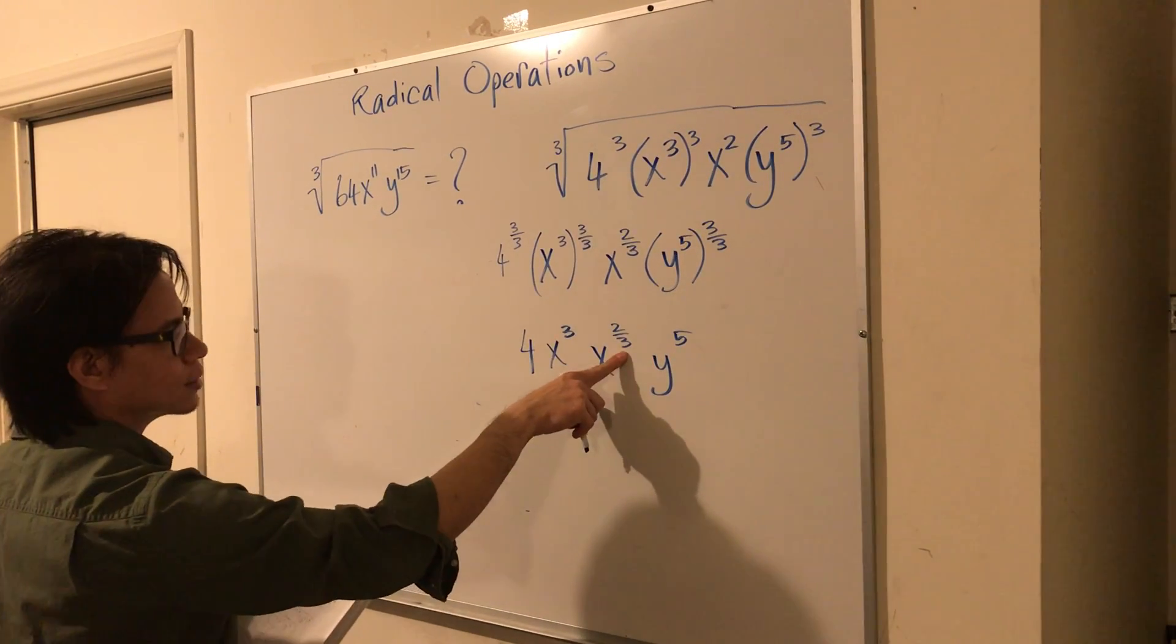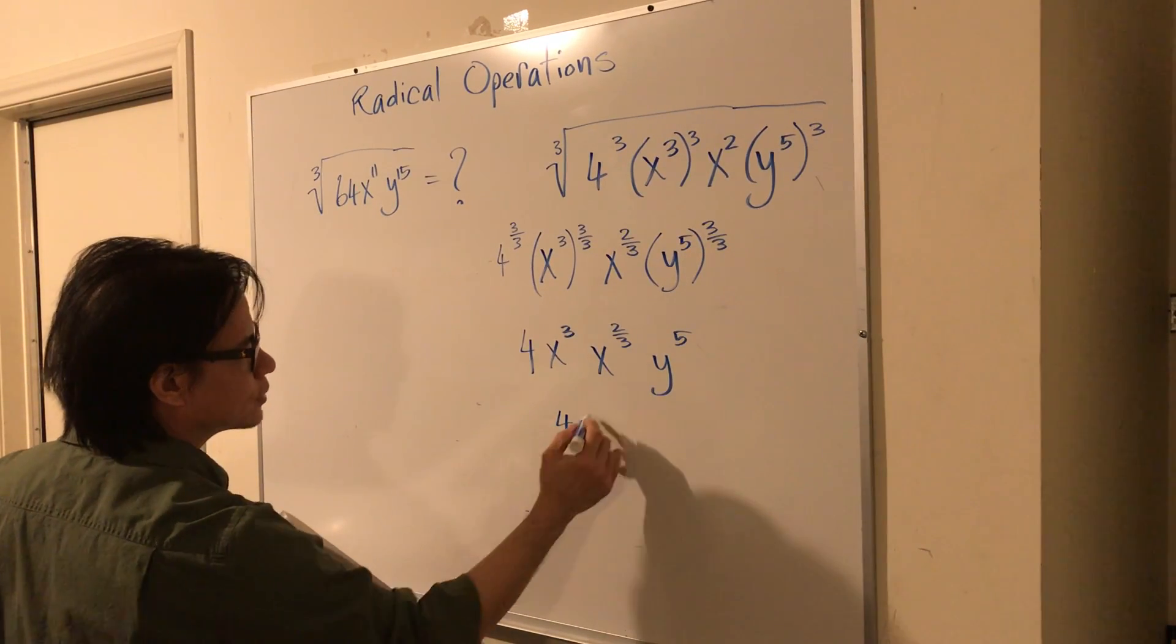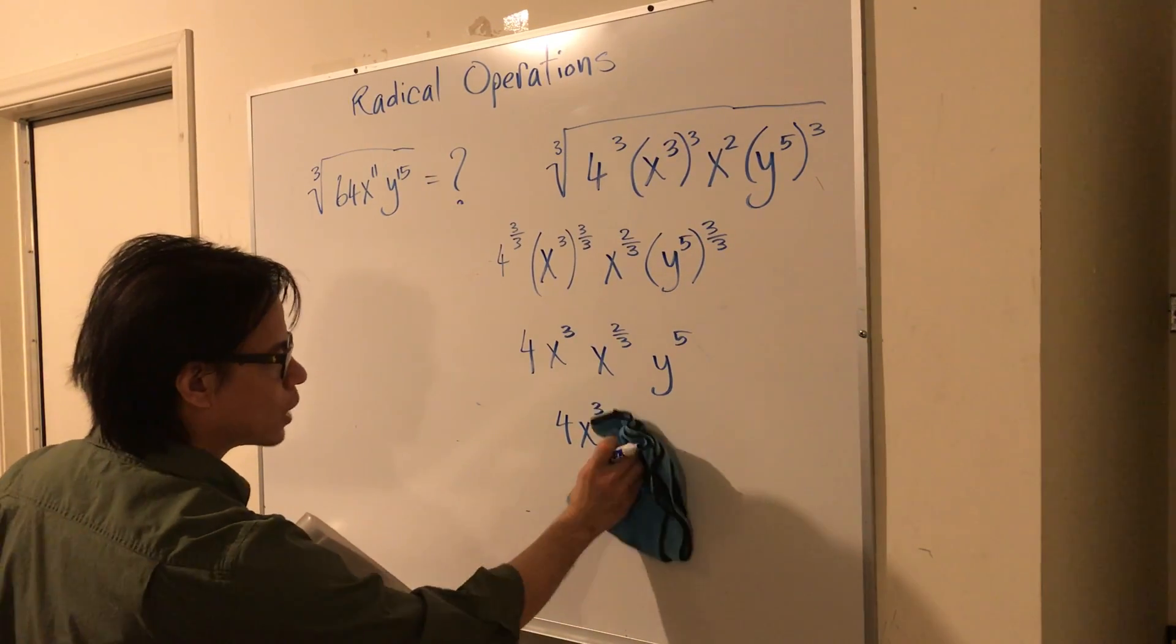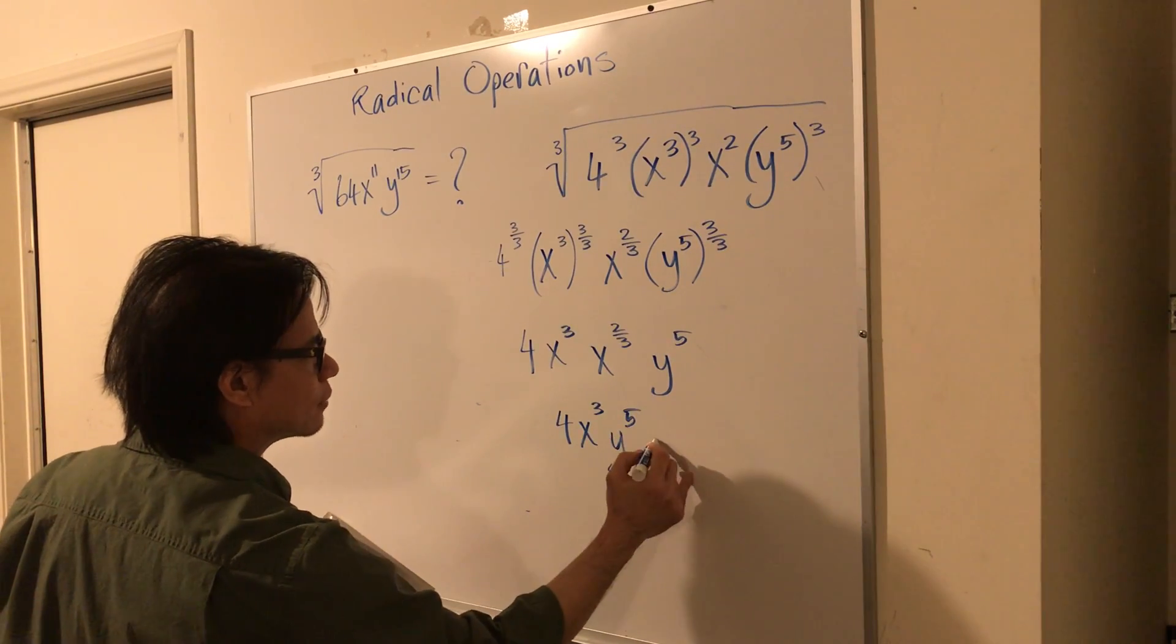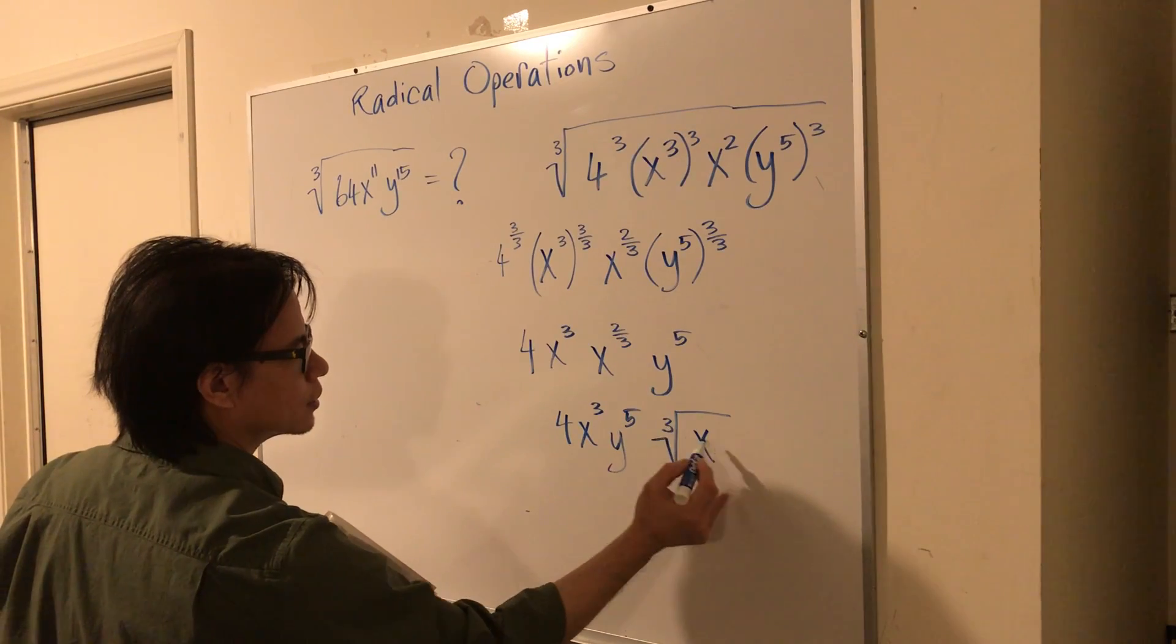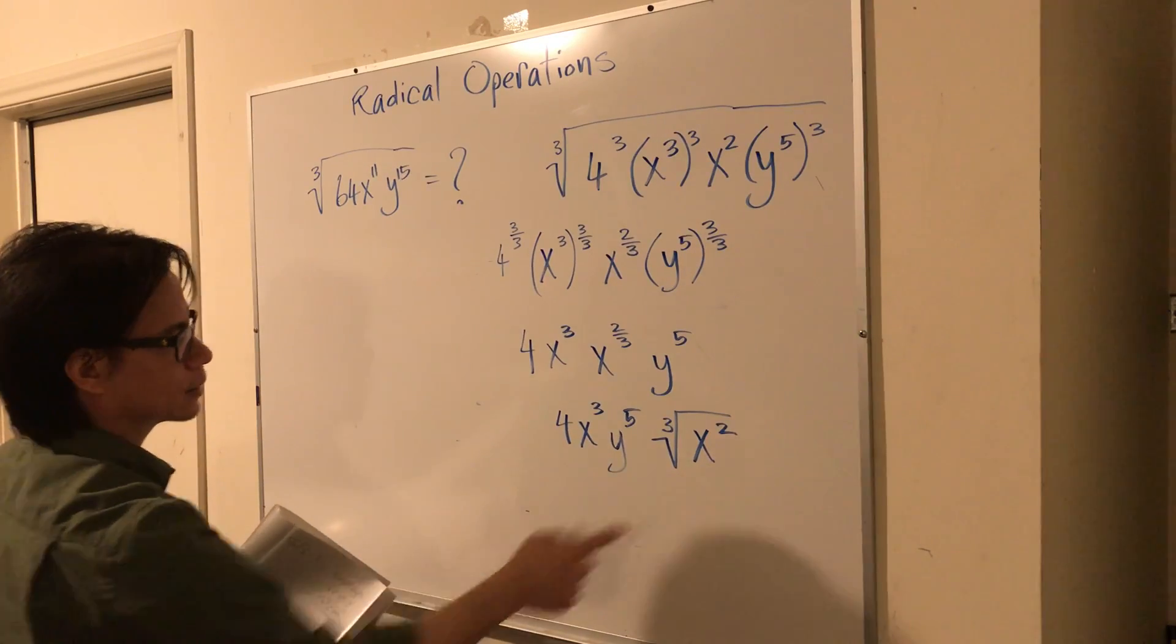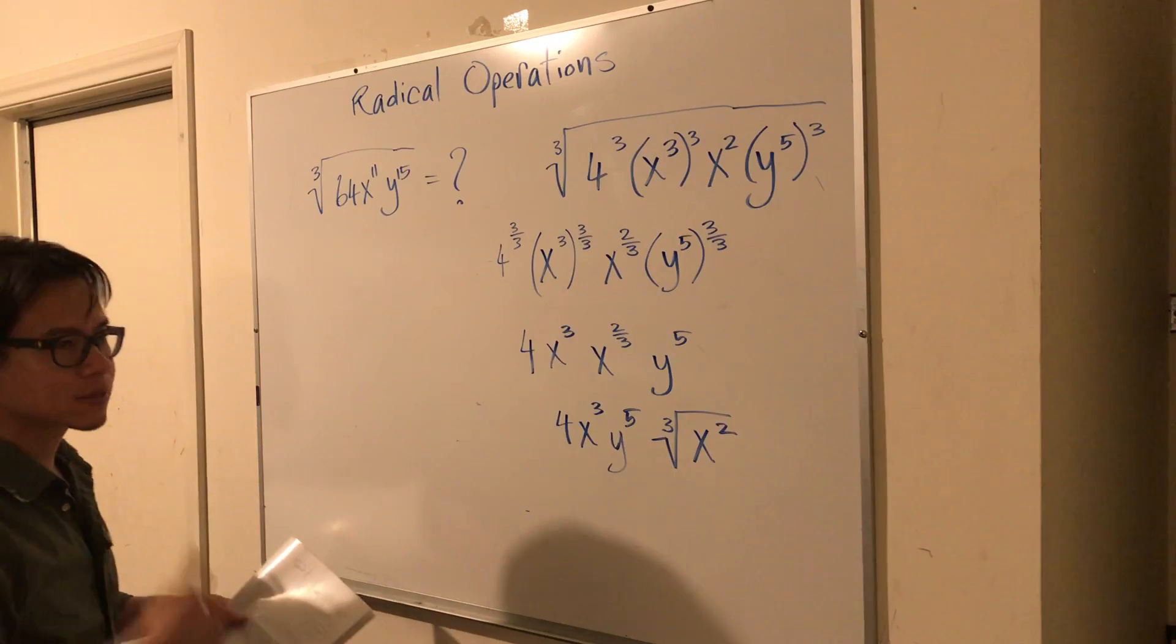Now this is a fraction here. So we're going to rewrite this as 4x to the third. And then this one, you know what? Let's put y to the fifth out first. And then we'll have our square root of x to the third. So this one is that guy there. Sounds good?